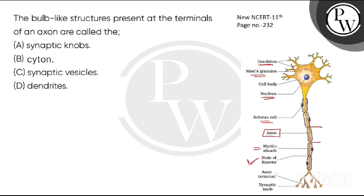The axon terminal—you are seeing there are a lot of axon terminals coming from here which are called bulb-like structures. These bulb-like structures are called synaptic knobs.